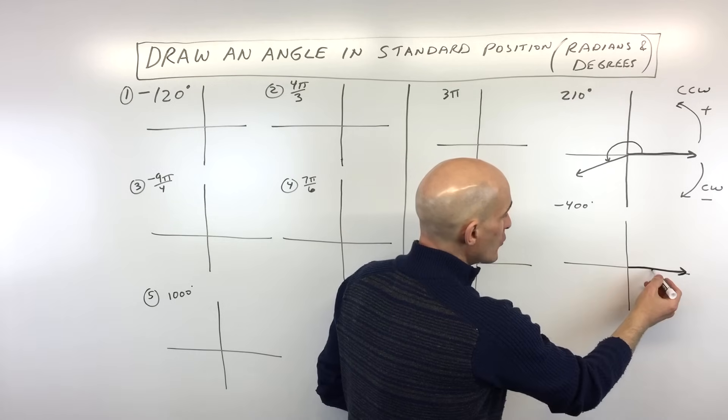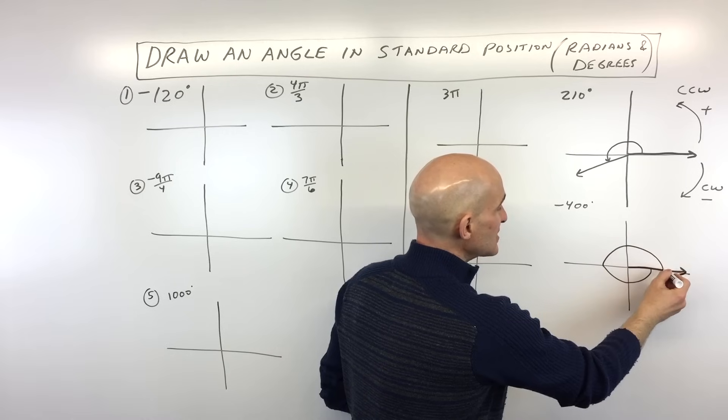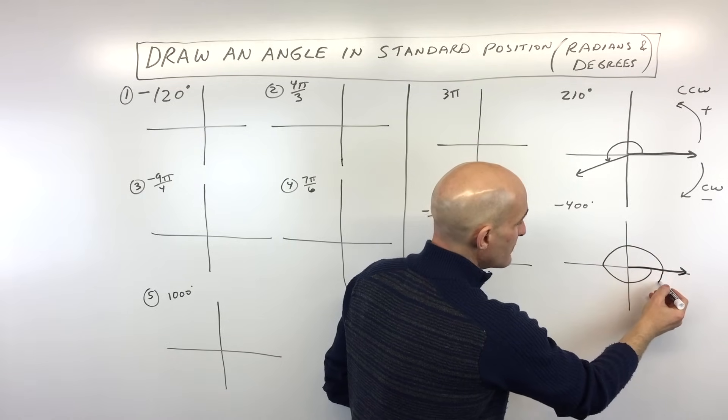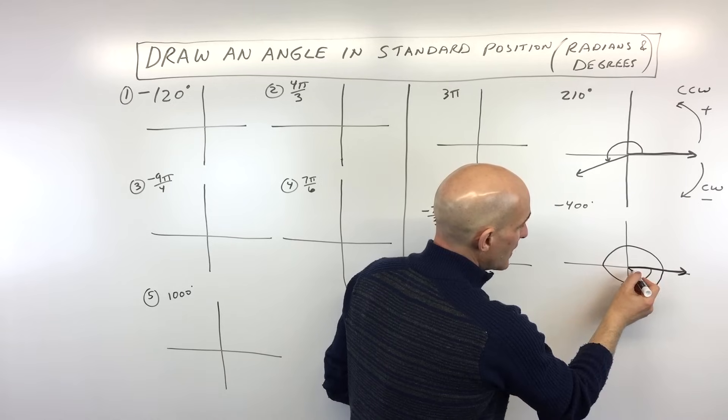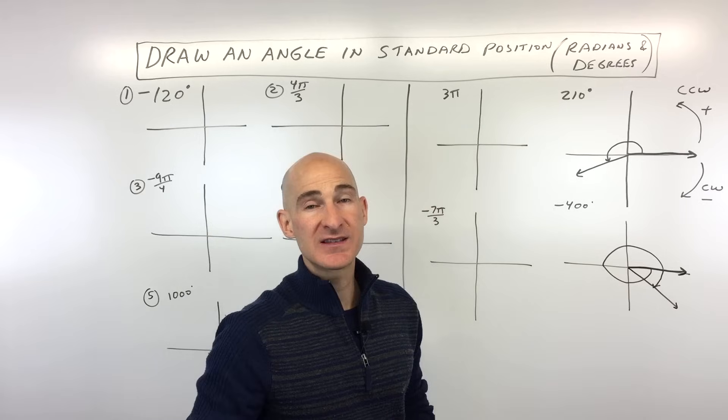So what we're going to do here is we're going to rotate 90, 180, 270, 360. Notice I'm spiraling out. And then how many more to get to 400? That's about 40 degrees. And so we're going to end up right there. And I'm just going to draw my arrow to show the direction that I went. So that's negative 400.